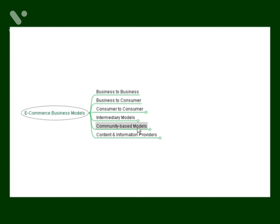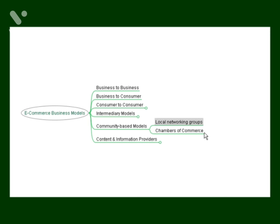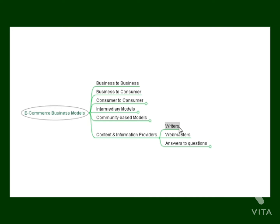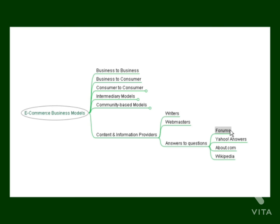Then there are the community-based models, where you're part of a large community of like-minded individuals and your business or niche is only focused on that particular group of people. It's pretty much closed to those outside that community, and a lot of networking takes place within that group. Local networking groups and local chambers of commerce fall into this category. And then there are content and information providers, which include writers, webmasters, and people who answer questions on forum sites, Yahoo Answers, About.com, and Wikipedia.